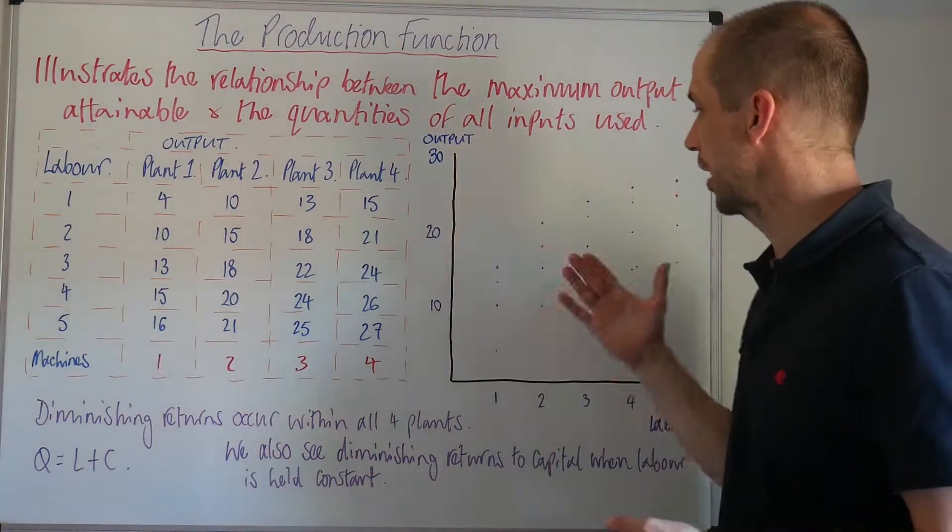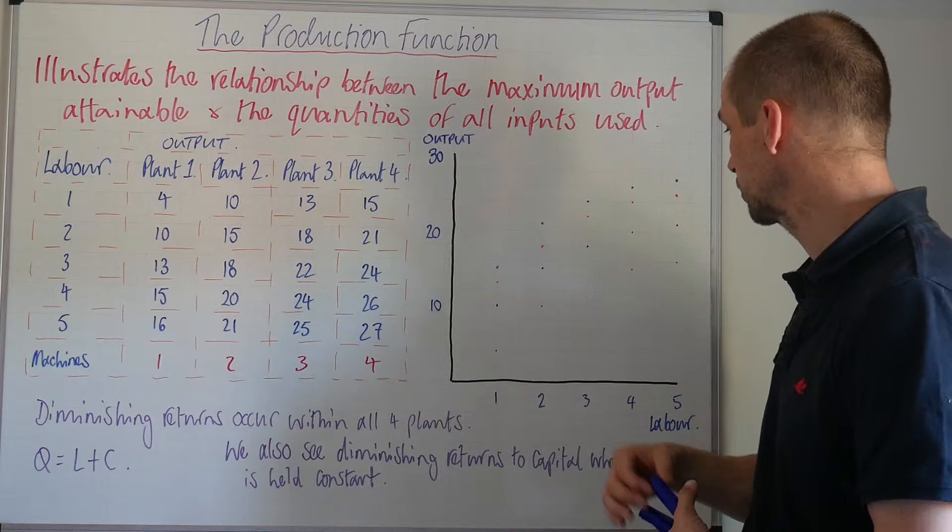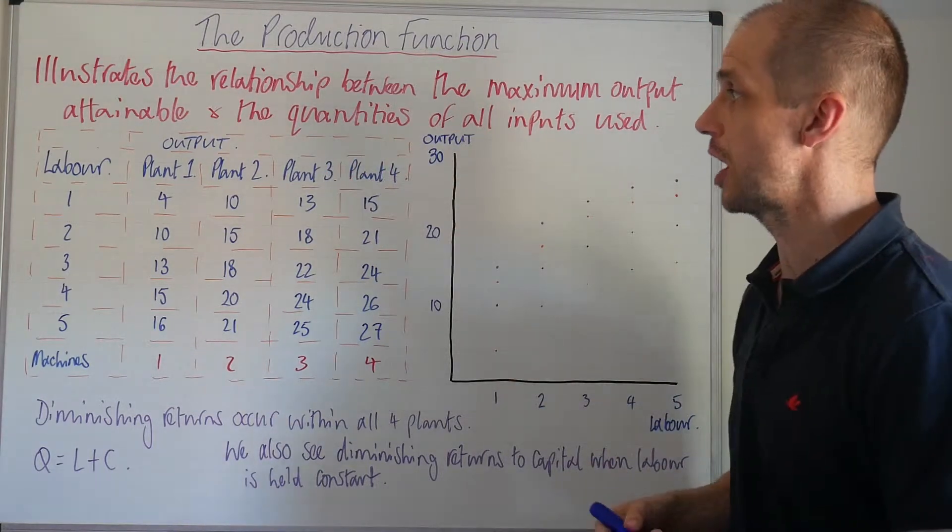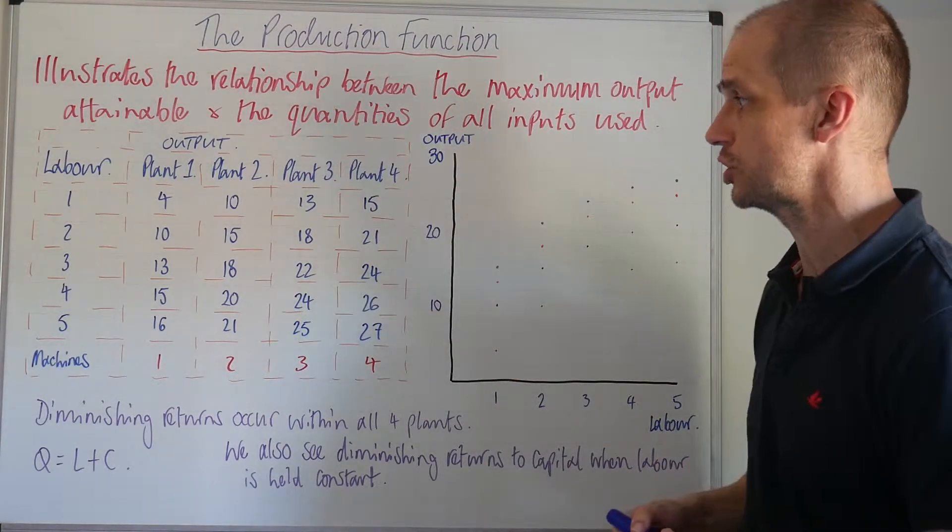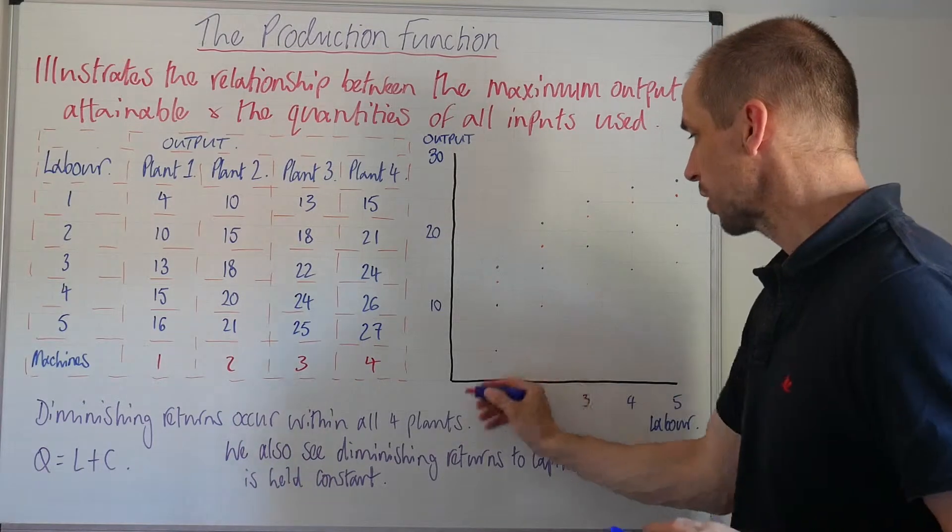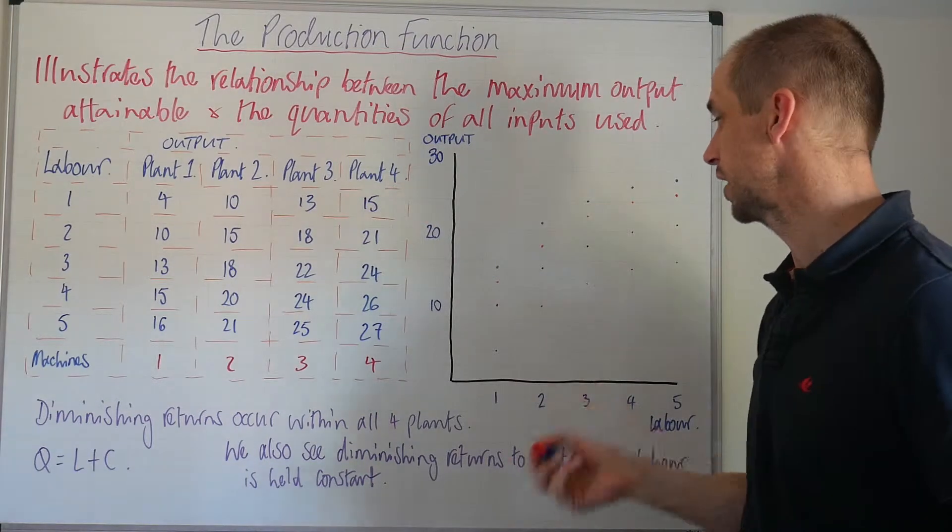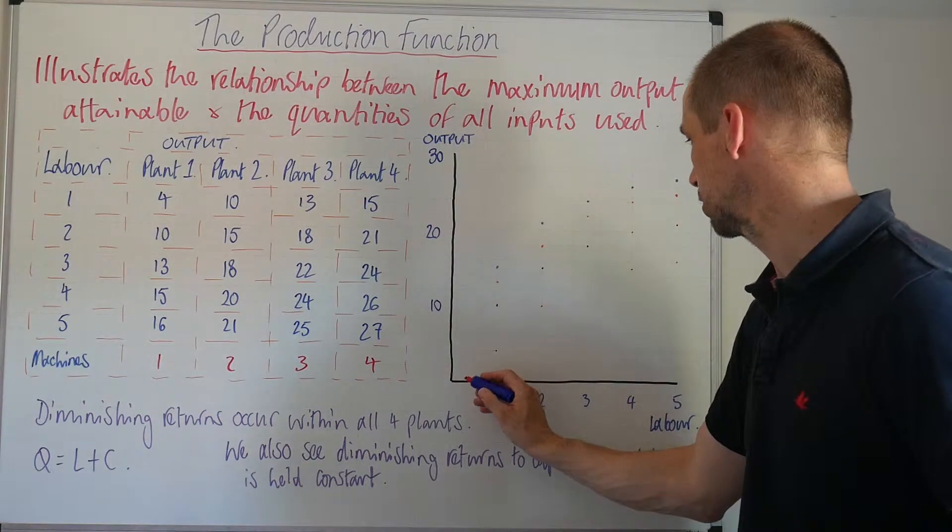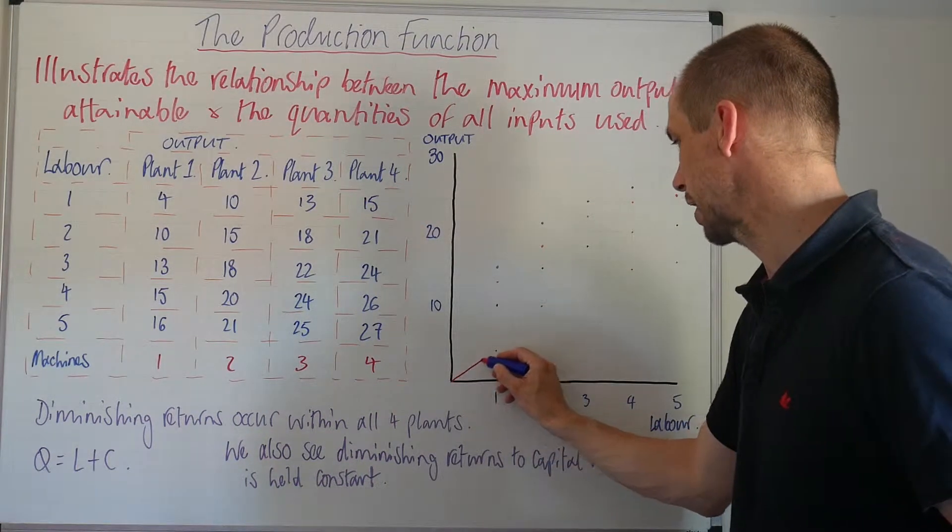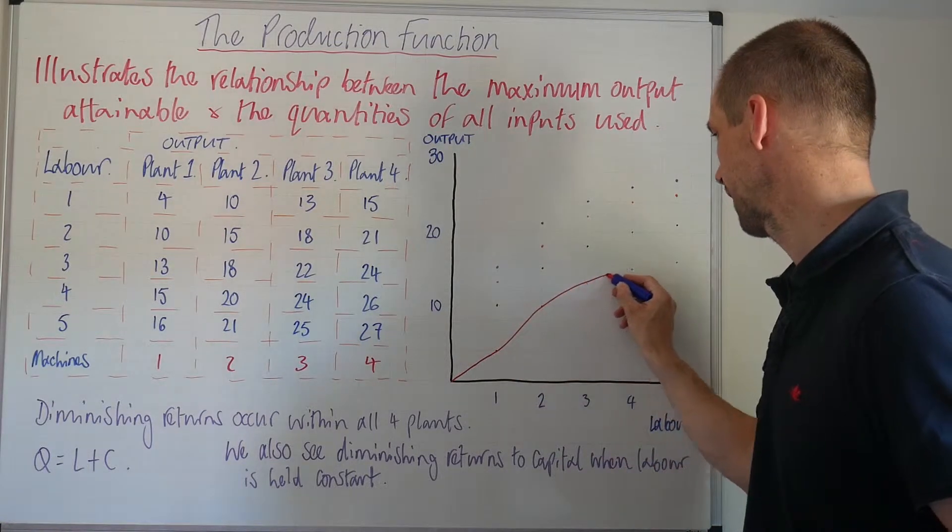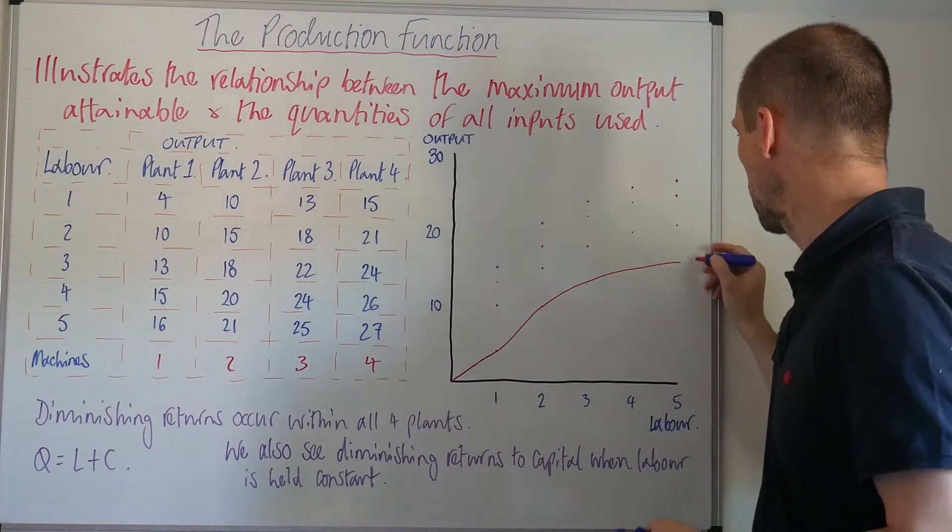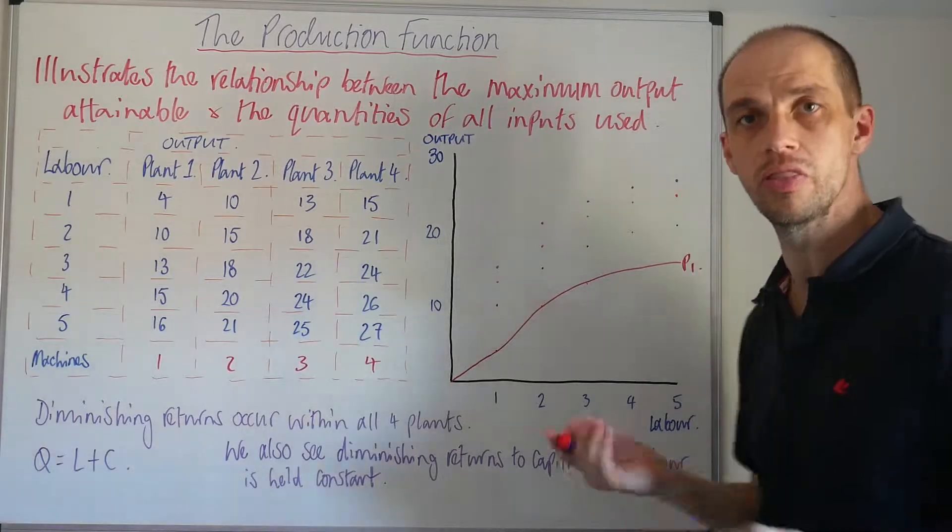So let's just have a look at how this actually looks with regard to each of these different plants in operation that we see here. So with our first example, let's just draw that one through. We go from four to ten to thirteen, fifteen, sixteen. So let's just put that one through and we can see something like that for plant one there.